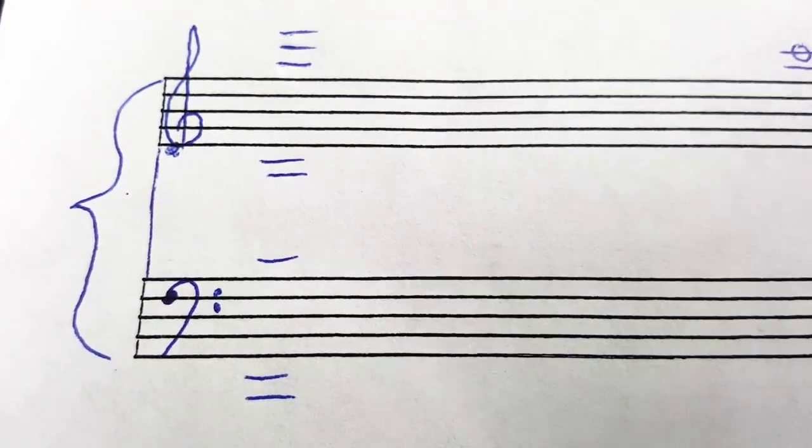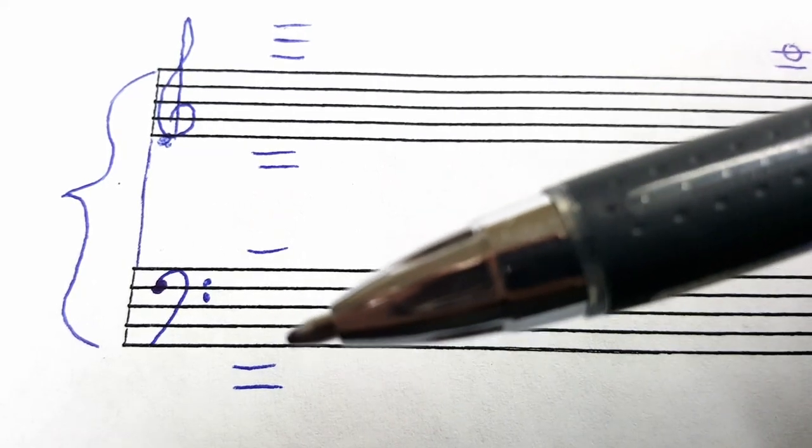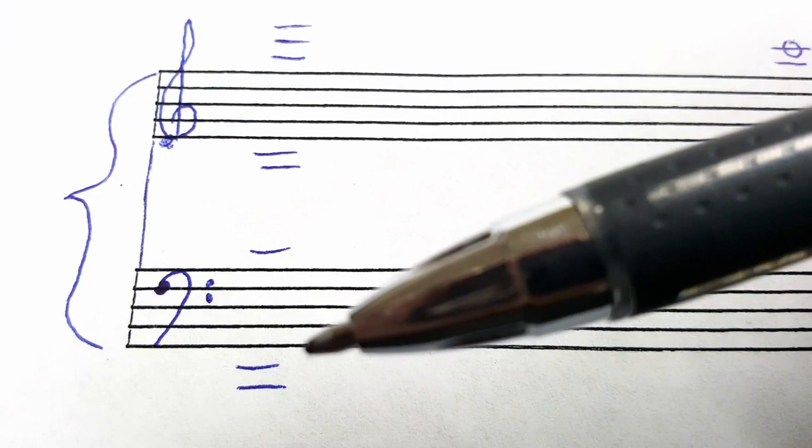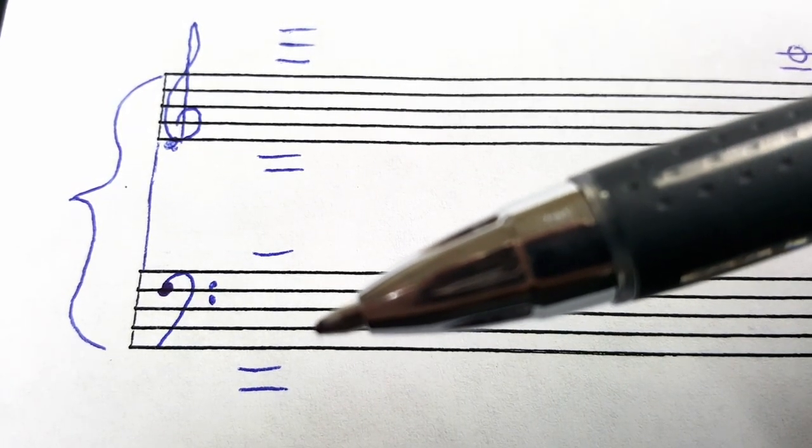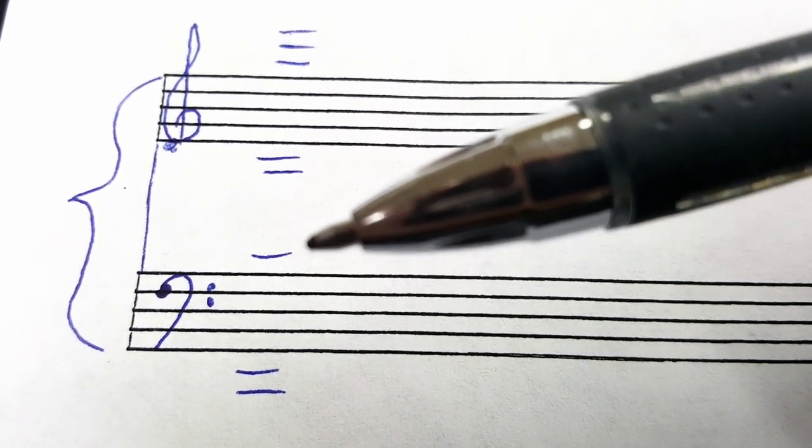The same is true for bass clef. You're using the alphabet to name these lines and spaces. The first line is G, the first space is A, the line is B, C, D, and so forth going up the staff.